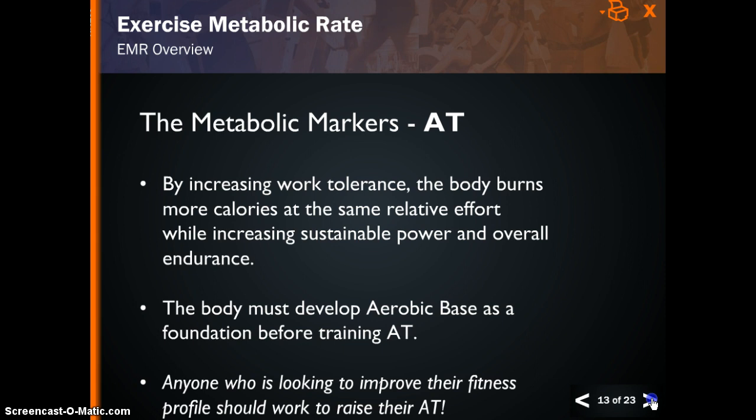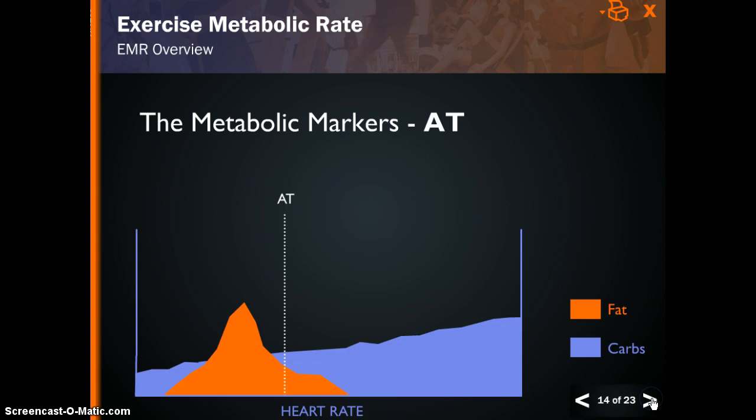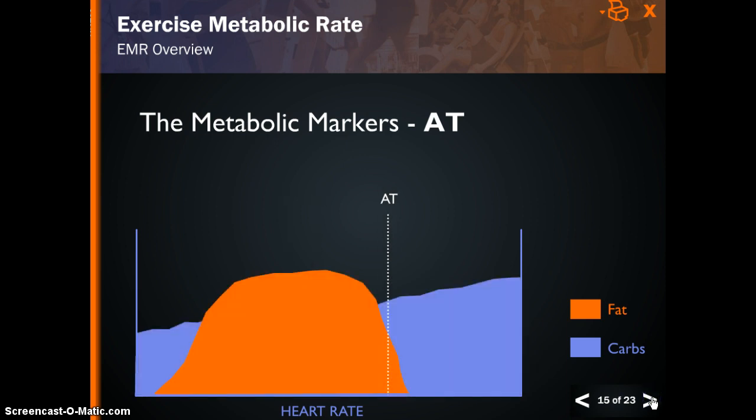In this graph, we add the anaerobic threshold marker to aerobic base. In the following graphs, observe how anaerobic threshold increases with training. As aerobic base — defined as the body's ability to utilize fat — increases, anaerobic threshold, the body's highest sustainable caloric burn rate, also increases.